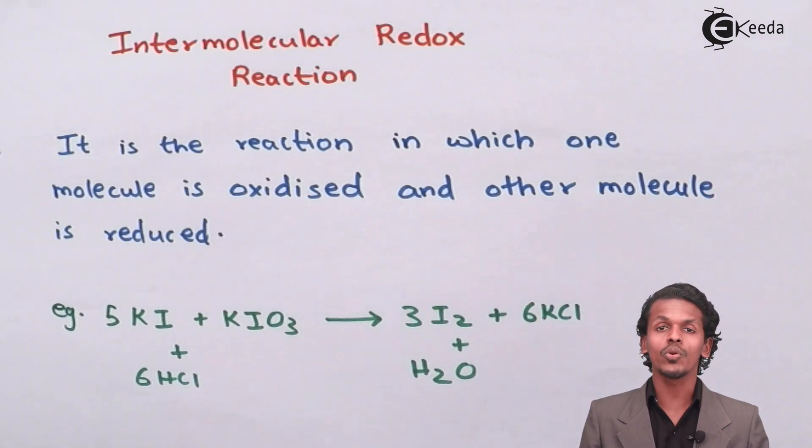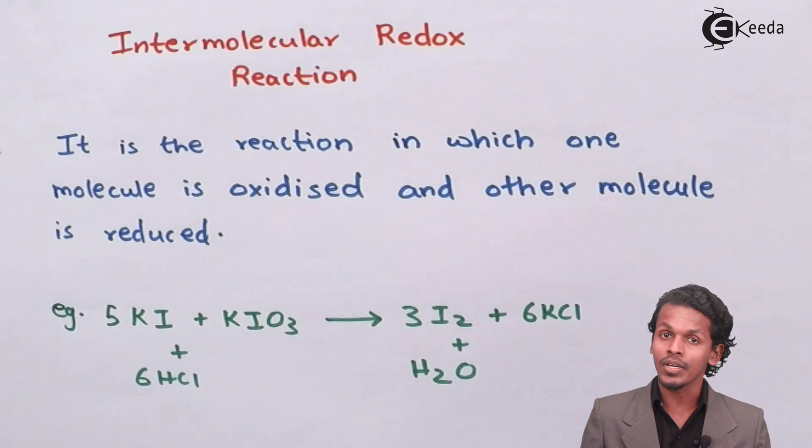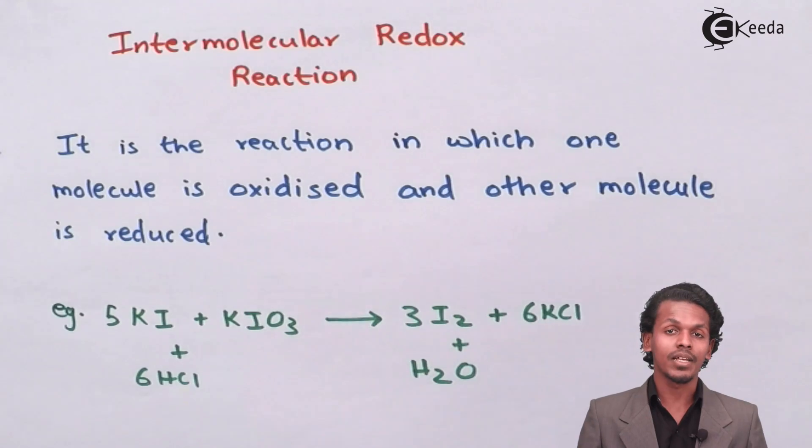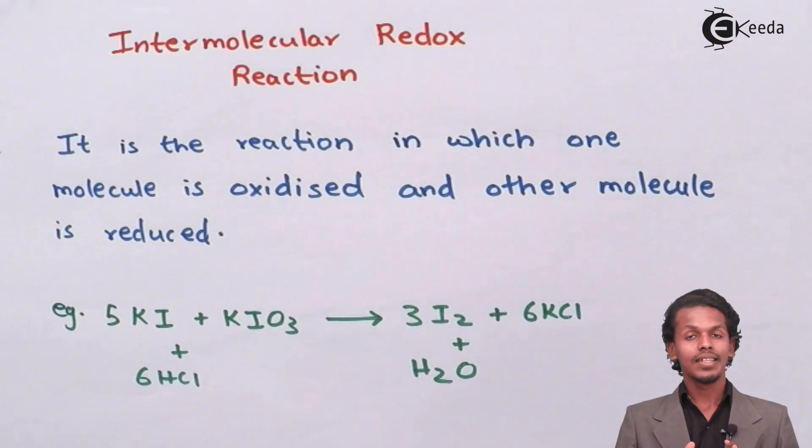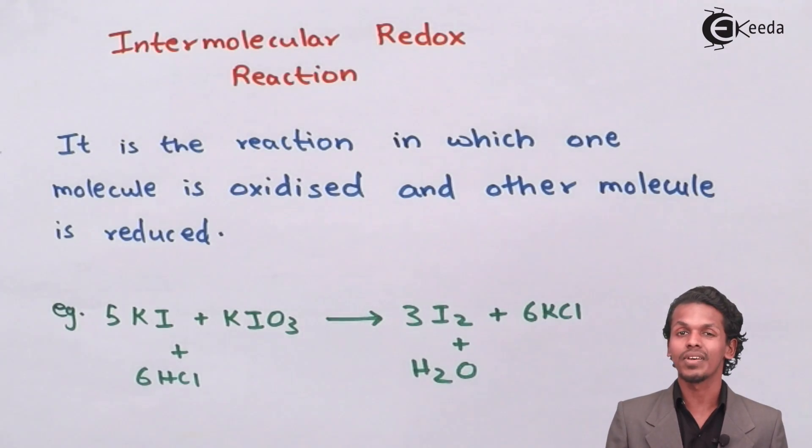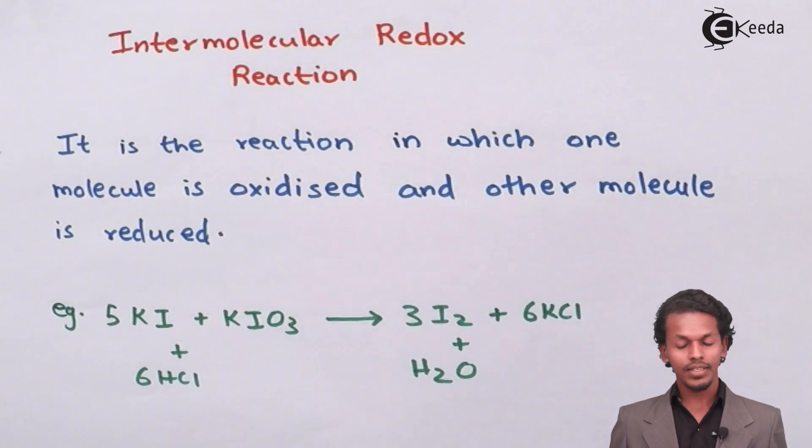But when it comes to molecules, one molecule will change its oxidation number in the product while the other atom which is present in the molecular form will change the oxidation number and turn into a product. So this kind of reaction in which two molecules of the reactant species are changing their oxidation number is known as intermolecular oxidation reaction. Let me give a short example.